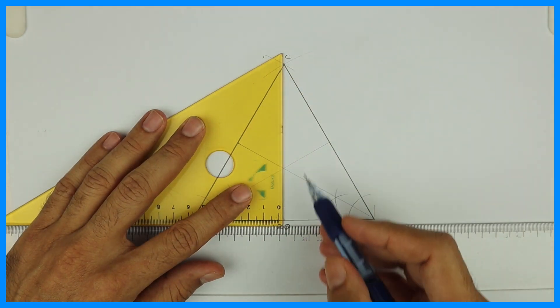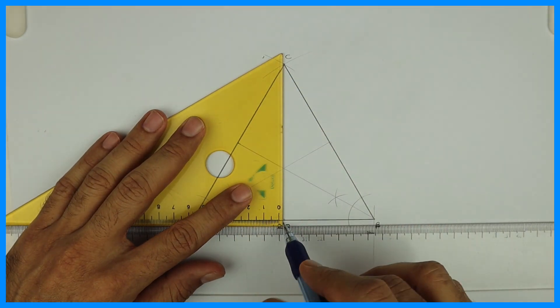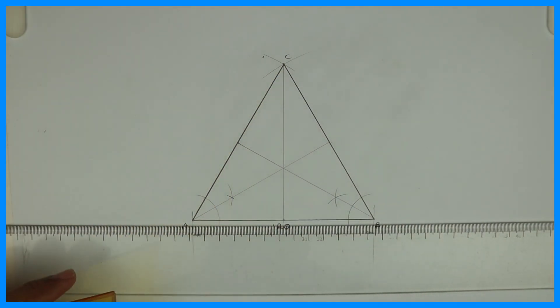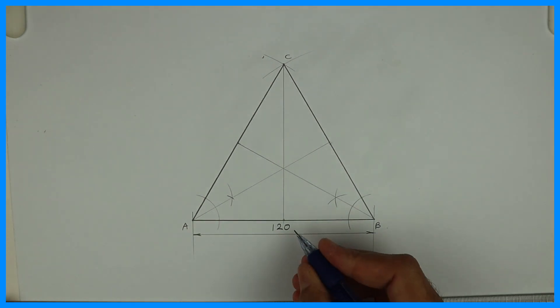Then from C you will draw vertical line. So we got this three parts.